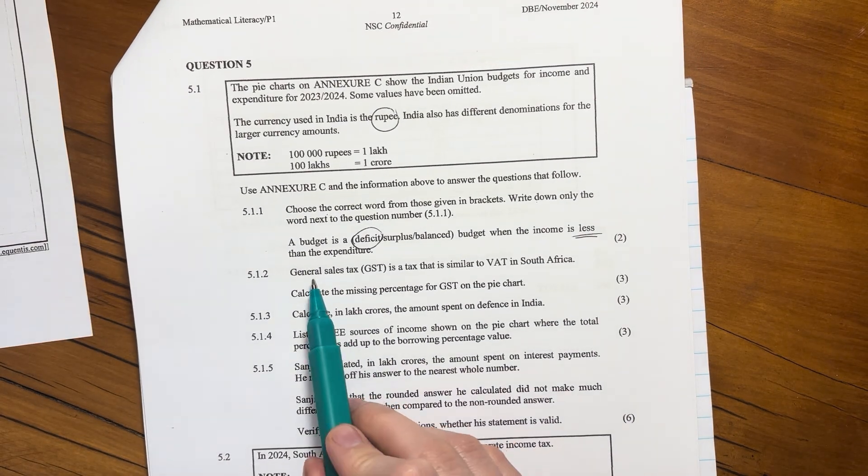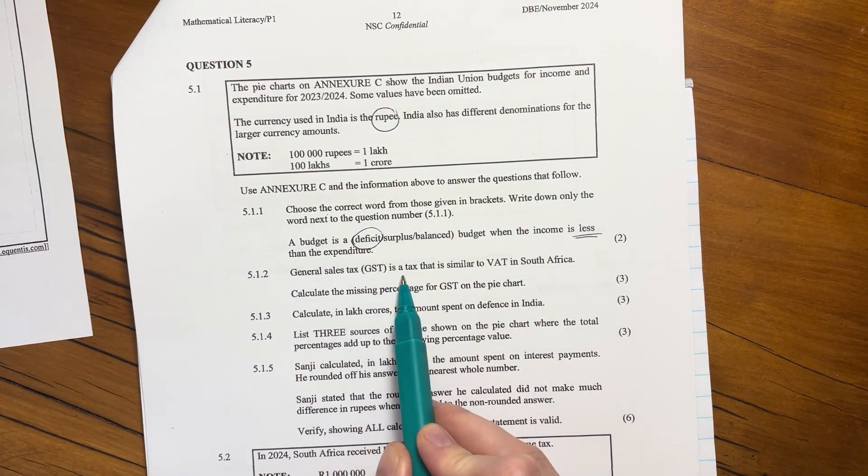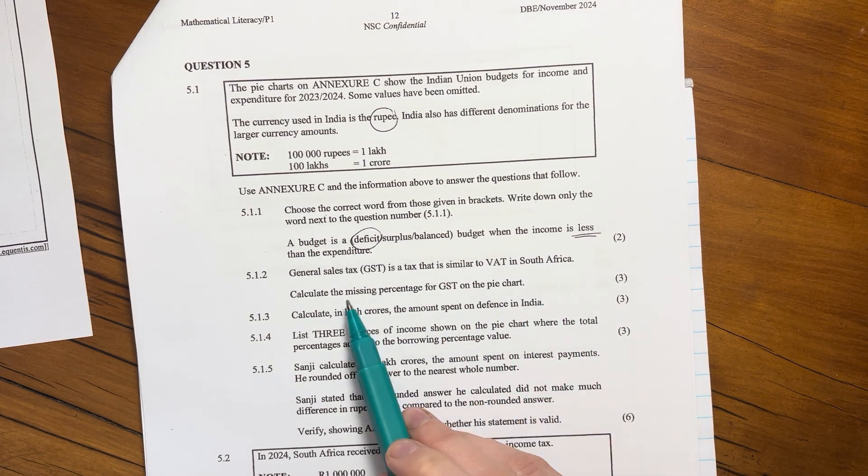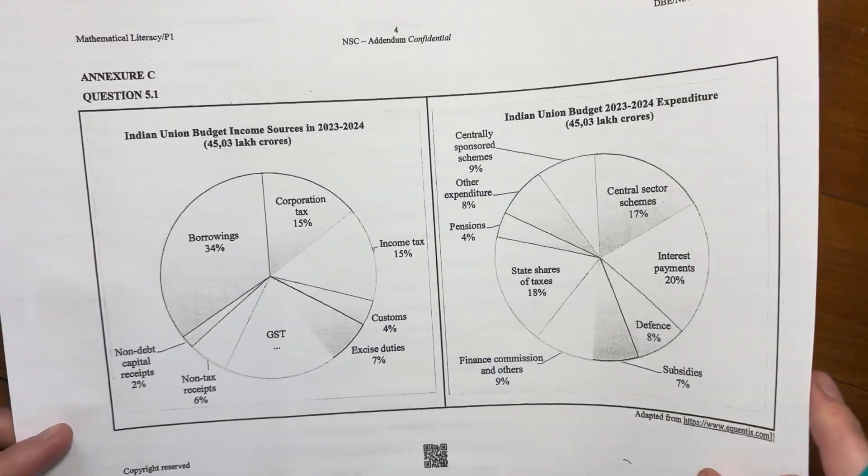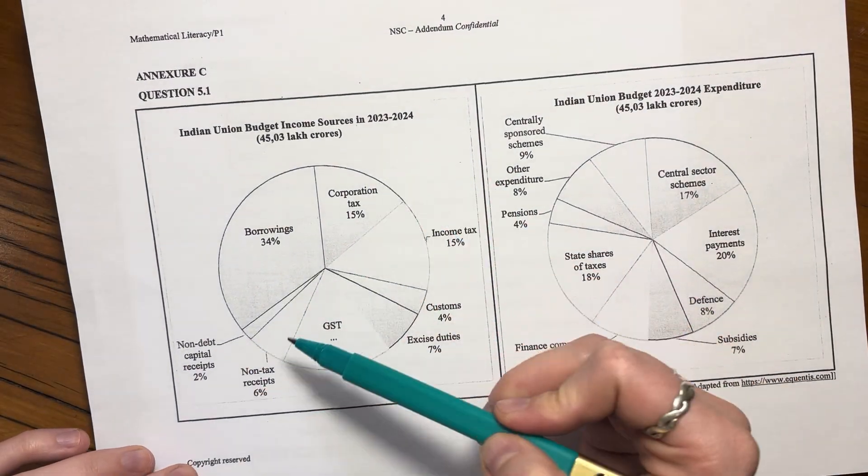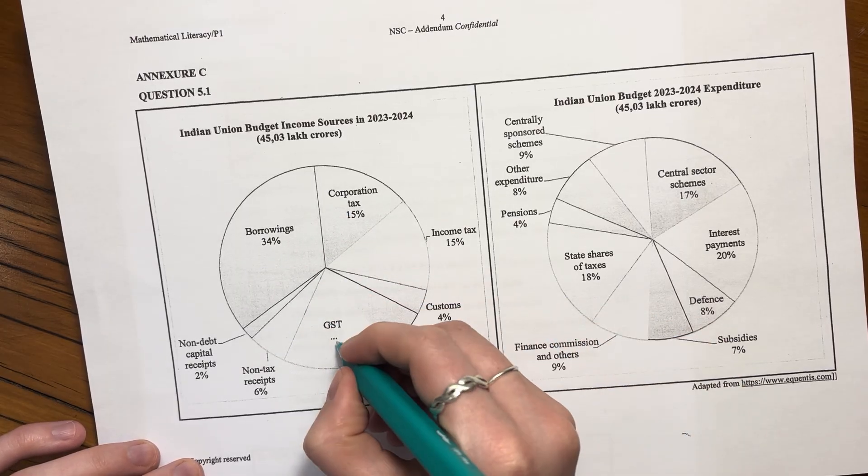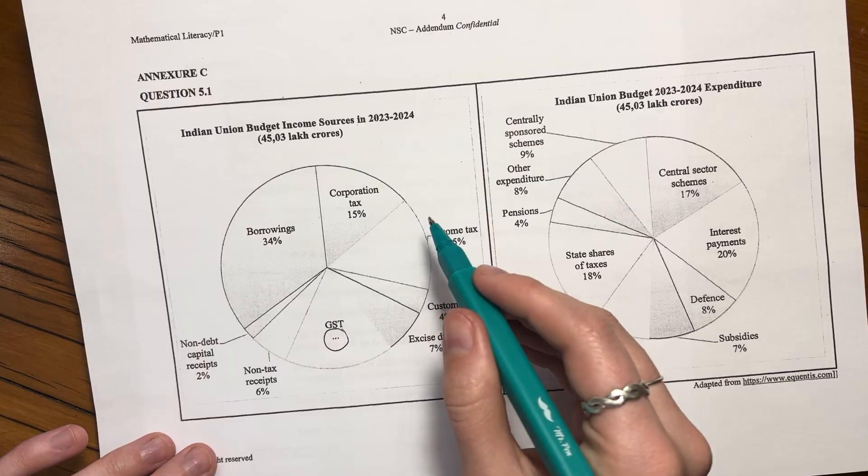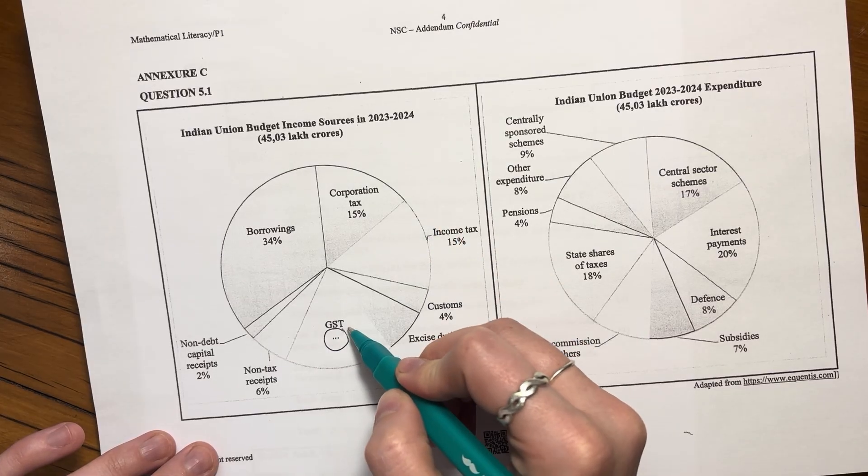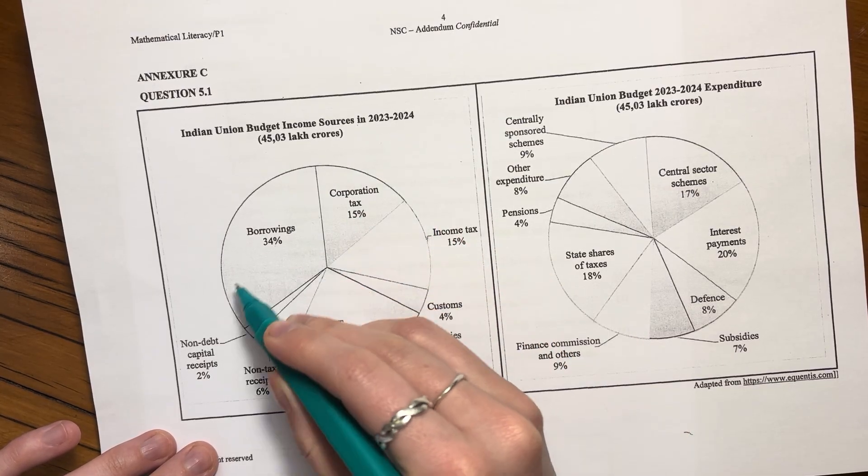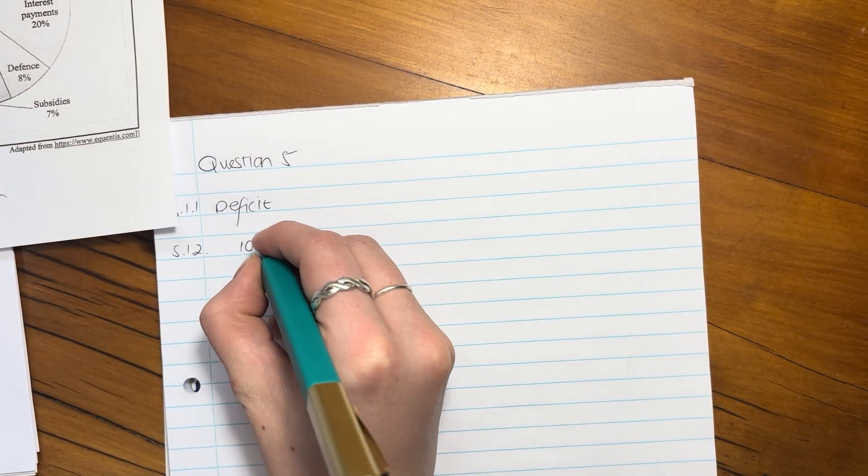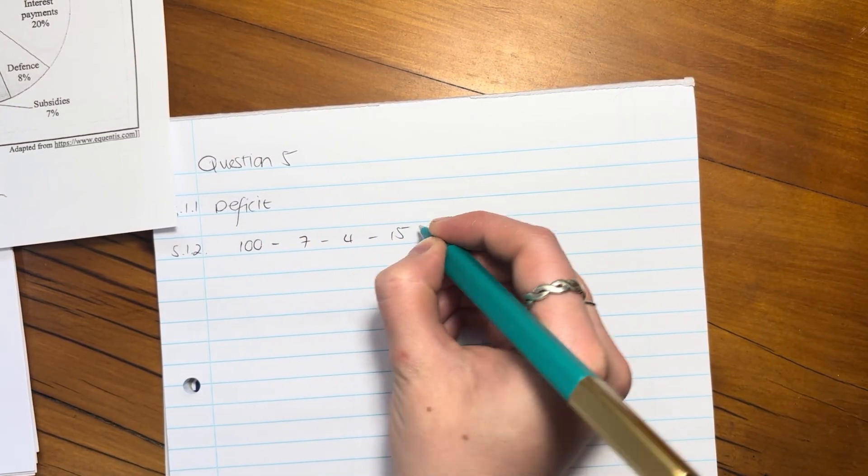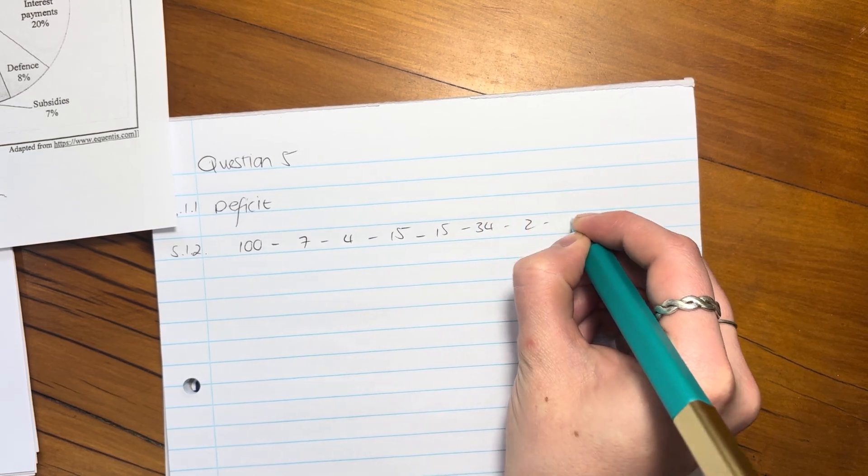Let's look here. General sales tax, GST, is a tax that is similar to VAT in South Africa. Calculate the missing percentage for GST on the pie chart. So let's just look at the pie chart. So you see the pie chart here for income. We have all of these here. And then we're missing this percentage here. Now remember, a pie chart has to add up to 100%. So in order to get GST, you just say 100% minus 1, 2, 3, 4, 5, 6, 7 percentages. So you subtract all of those off.